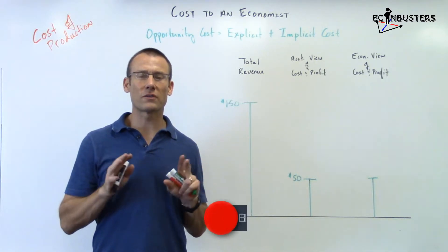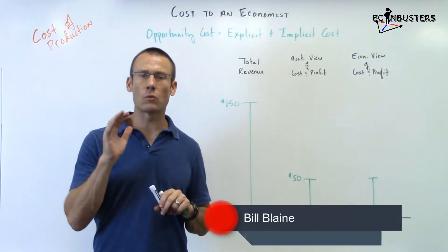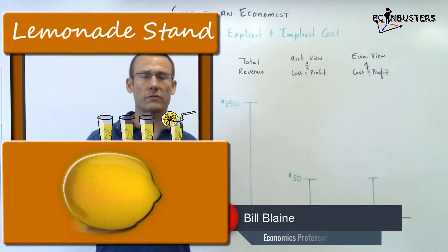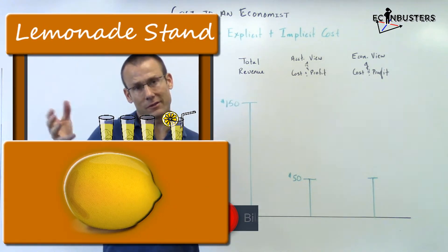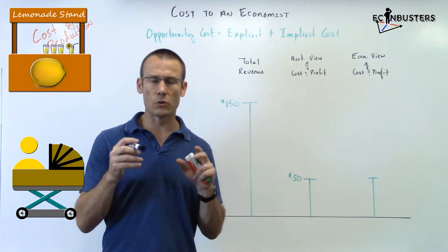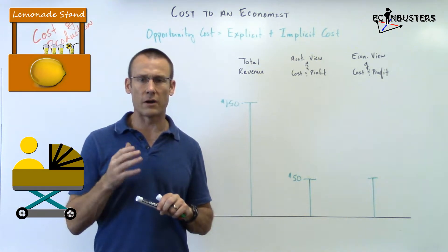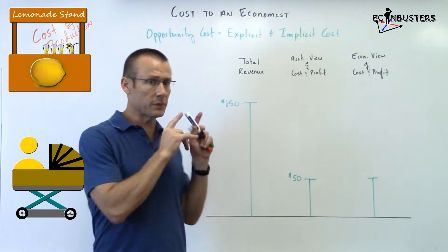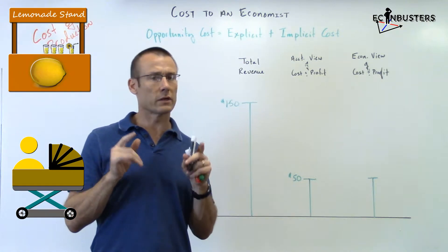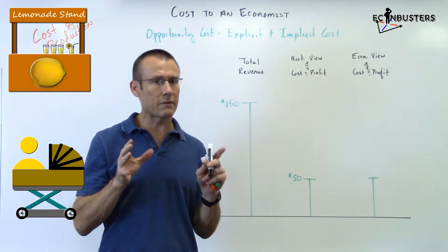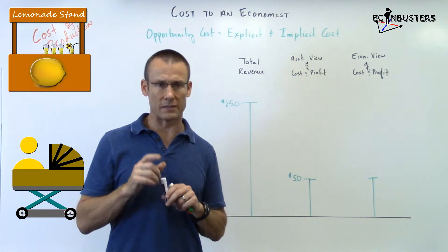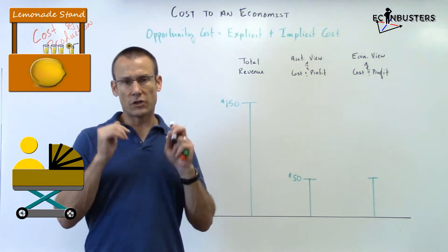Hey everybody, welcome back. Hopefully you just got done watching part one of opportunity cost — it's about Lisa and the lemonade stand, or rather Lisa's choice between the lemonade stand and babysitting. It's important that you saw it, but I'm going to do a really quick recap right off the top. In this video we're only going to be evaluating the lemonade stand.